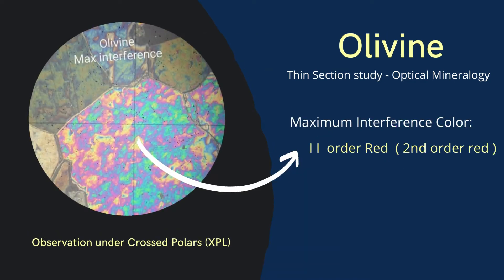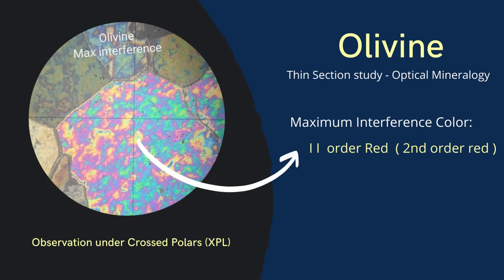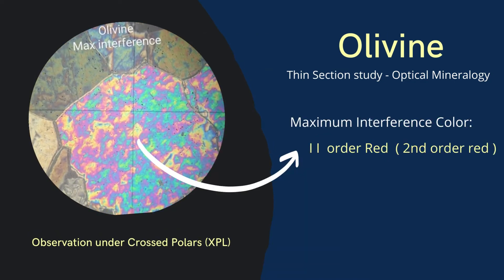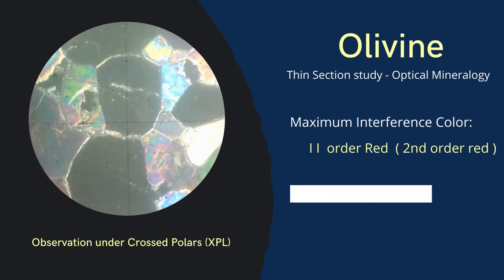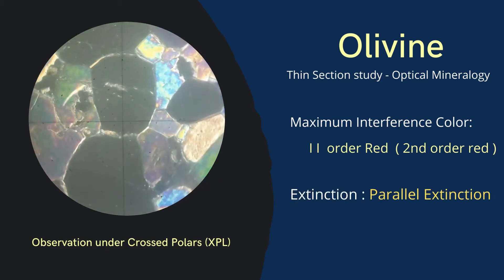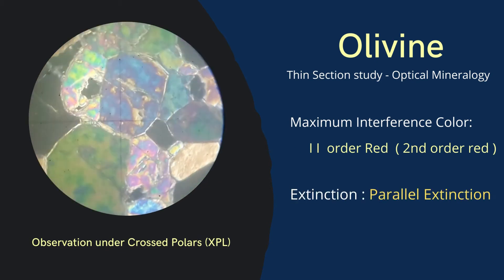Under crossed polars, olivine shows second order maximum interference colors, parallel extinction.